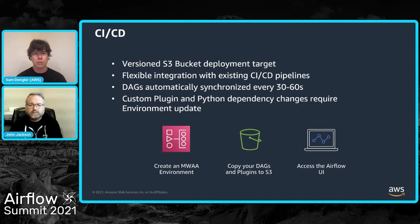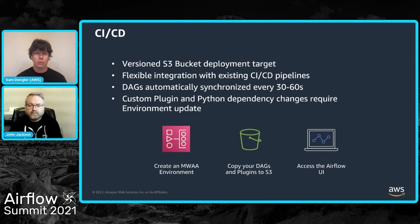The other type of updates are to an optional custom plugins zip file or a requirements TXT file for Python dependencies. When you update these resources, they're not automatically applied — you need to make an API call or use the AWS console to trigger an environment update with the new version of these resources. When you do, we perform a rolling deployment of the components with your new code, so your environment stays available while workers are cycled in sequence with the new requirements.